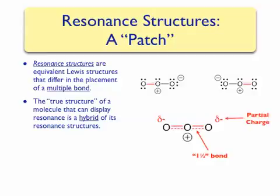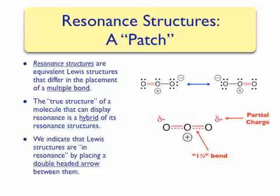And once again, partial charges are on the oxygen atoms. We indicate that two or more Lewis structures are in resonance by placing a double-headed arrow between them.